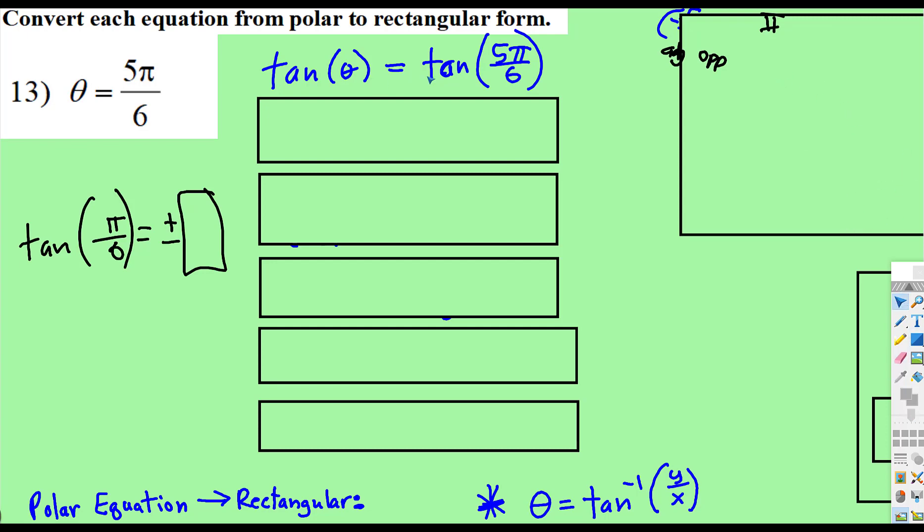So now we have tan(θ) is equal to tan(5π/6), well, we just discovered what tangent of 5π/6 is negative √3 over 3, and what do we know about tangent? If you look at your identities,